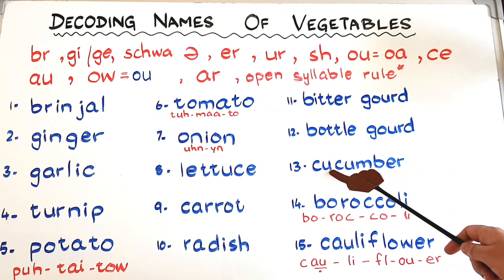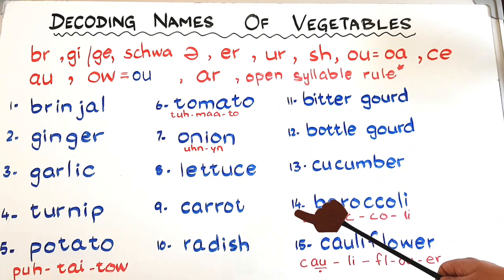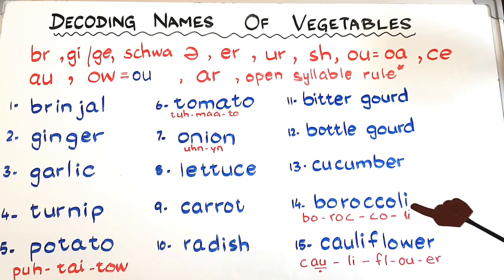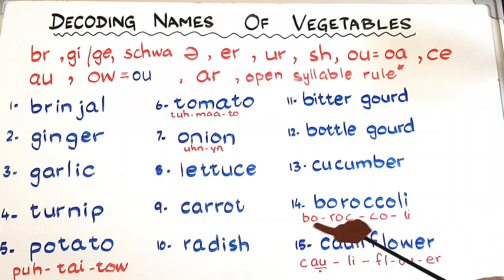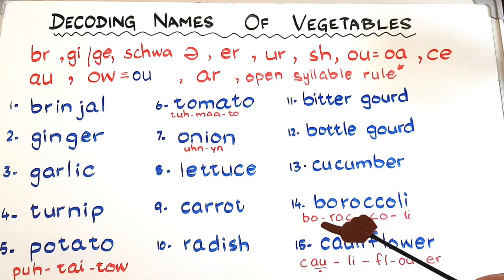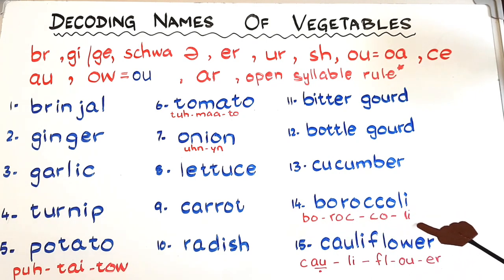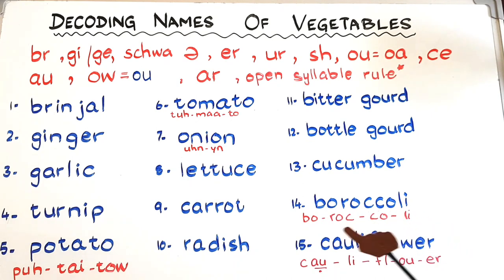At number thirteen we have cucumber — open syllable rule applies: Q-U, then 'cum', then B. At number fourteen we have broccoli. To help your child remember the spelling, tell him to sing it in rhythm: 'bo-ro-co-li, bo-ro-co-li'. If you think it in a rhythm, he will write the correct spelling. The pronunciation is 'broccoli' but for spelling purposes you sing 'bo-ro-co-li'.